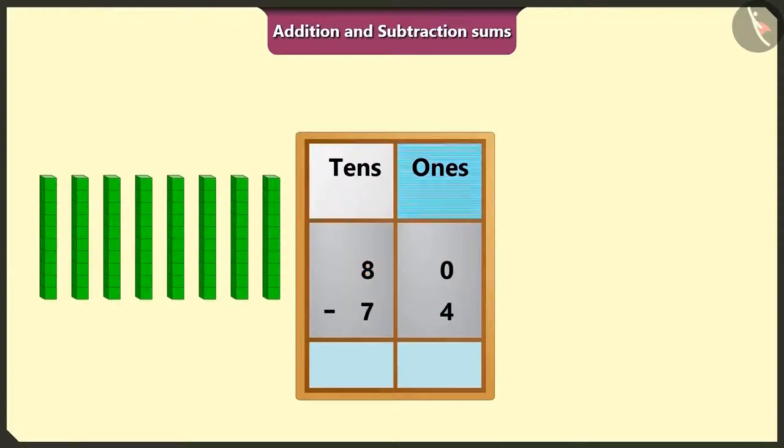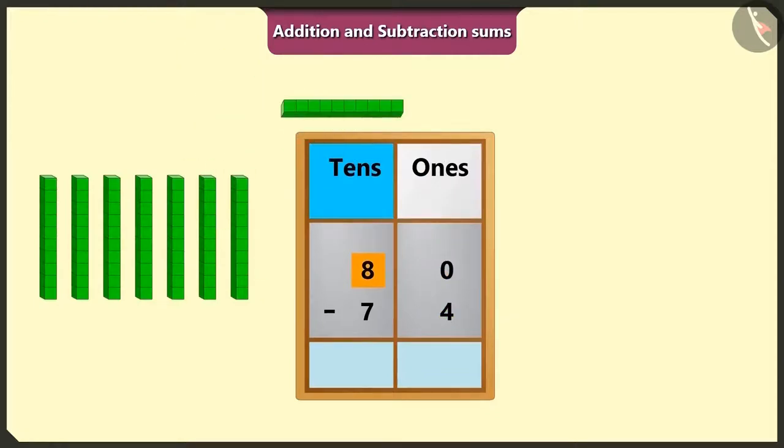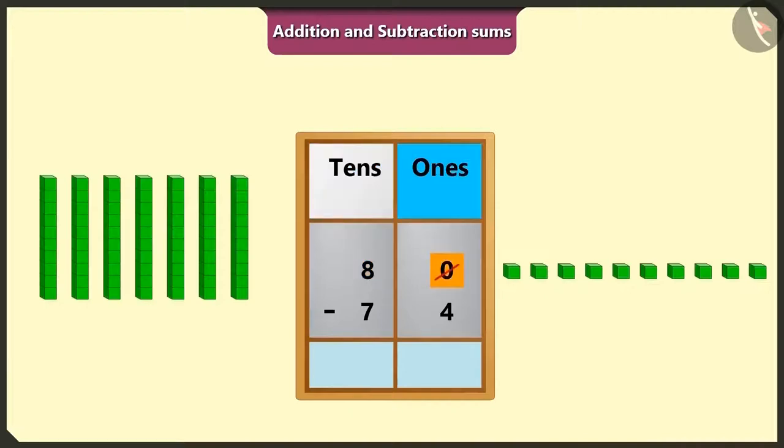First of all, we will do subtraction of numbers of the box of ones. Here, we cannot subtract 4 from 0. So, we will borrow one ten from eight tens. Now it will be ten ones in place of zero in the box of ones and seven tens in the place of eight tens in the box of tens.